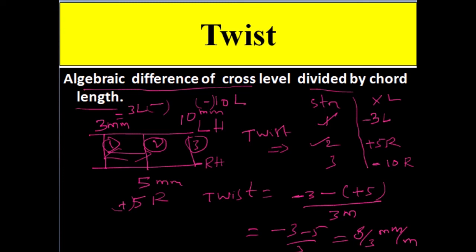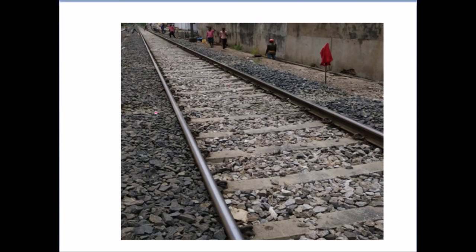To summarize all four concepts: Unevenness — take a single rail and look at the surface undulations, the ups and downs, measured separately for each rail. Cross level — the level difference between the left rail and the right rail at the same cross-section. Alignment — with respect to the center of the track, whether there is any lateral misalignment. Twist — calculated based on the algebraic difference of cross level between two stations divided by chord length. Thank you for watching.